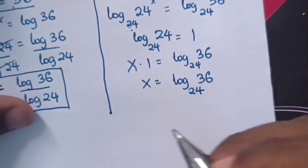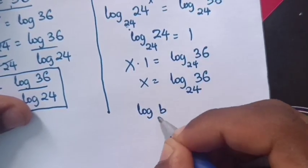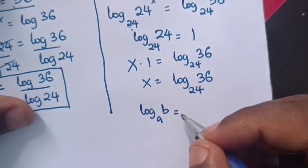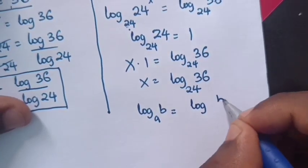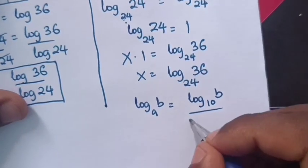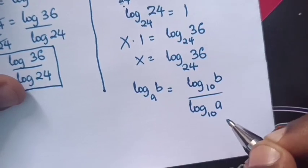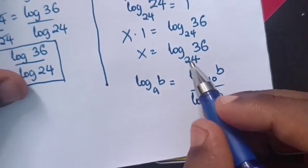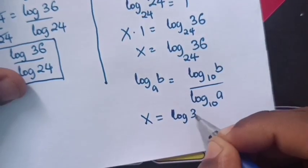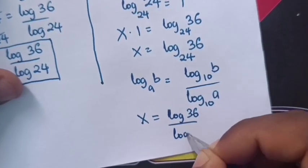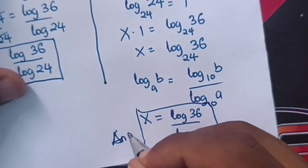To get the same answer as previously, we apply the logarithmic rule that log b base a is equals to log b base 10 over log a base 10. Therefore, x will be equals to log 36 base 10 over log 24 base 10, which is the same answer as previously.